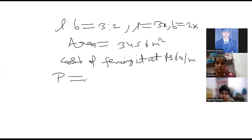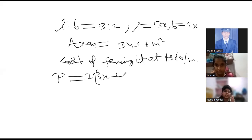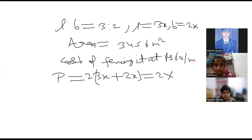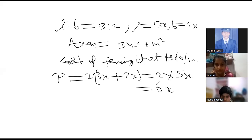Sir, 3x. 2 into L plus B. Yes sir. 3x plus 2x. Equals to 2 into 3x plus 2x is what? 2 into 5x equals 10x. Yes sir. So this is the perimeter. Yes sir. Now what to do?